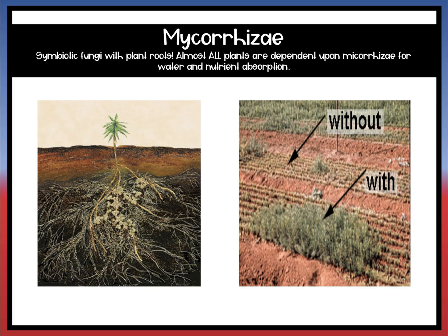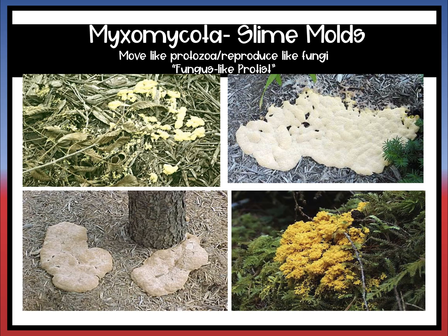Mycorrhizae is a symbiotic fungi that works with plant roots and helps with water and nutrition absorption. In the image on the right you can see that when you have mycorrhizae it helps the plants grow taller, and without it they don't grow as tall — so it's a mutualistic relationship. The last phylum is Myxomycota, which is your slime mold. These are actually fungus-like protists — they move like protozoa but reproduce like fungi.